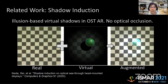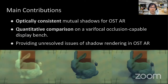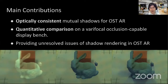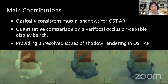There are some works tackling this issue — one approach uses shadow induction with visual illusions, implicitly occluding light from the real world by emphasizing the background scene to cause a visual illusion of shadow effect. Our main contributions are: we want optically consistent mutual shadows that are actually optically correct, and we conducted quantitative comparisons with a varifocal occlusion-capable display bench-top system. We also found many new problems and want to share them with the community.